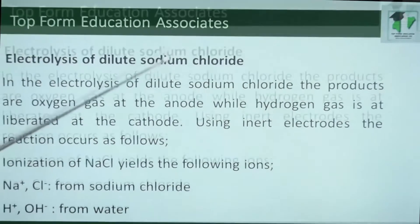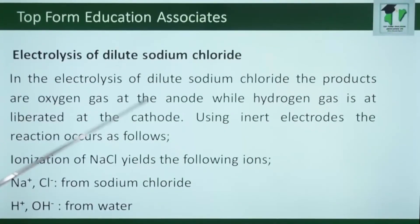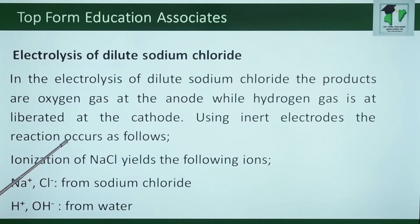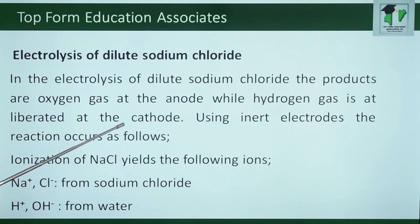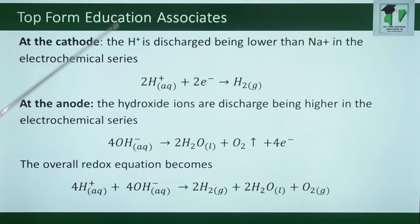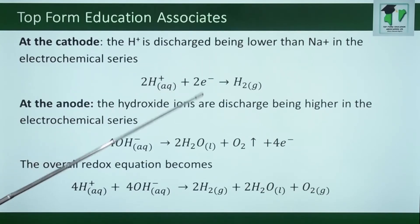Electrolysis of dilute sodium chloride. In the electrolysis of dilute sodium chloride, the products are oxygen gas at the anode, while hydrogen gas is liberated at the cathode, using inert electrodes. The reaction of sodium chloride involves the following ions: sodium ion and chloride ion from sodium chloride, and hydrogen ion and hydroxyl ion from water. At the cathode, the hydrogen ion is discharged, being lower than sodium in the electrochemical series; it gains electrons to liberate hydrogen gas.